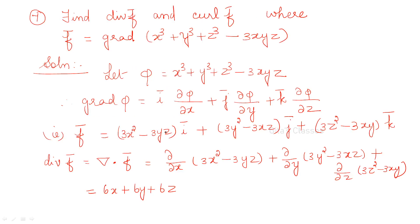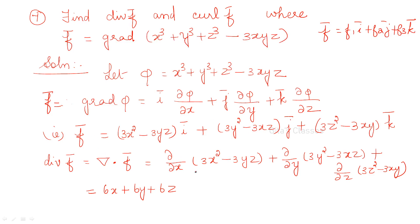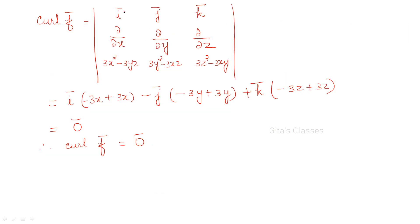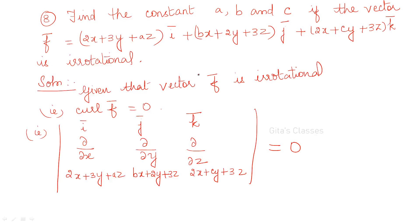Find the divergence and curl of F-bar. I told you in the beginning: if F-bar = F1 i + F2 j + F3 k, we can apply dot or cross product. Here, grad(phi) gives the vector point function F-bar. Divergence of F means del dot F. Curl F means the cross product, computed as the determinant with i, j, k in the first row, ∂/∂x, ∂/∂y, ∂/∂z in the second row, and F1, F2, F3 in the third row. By simplification, curl F = zero for this particular problem.